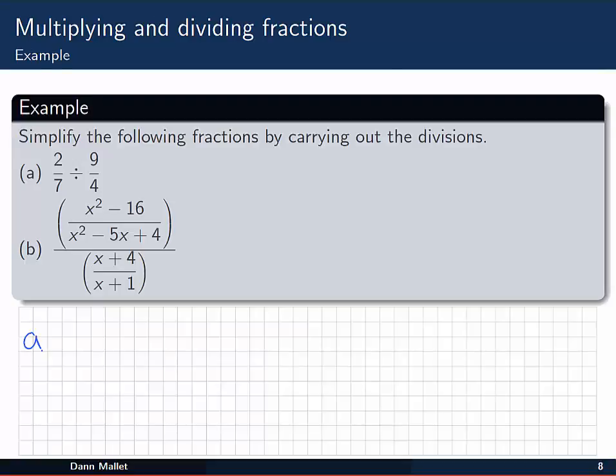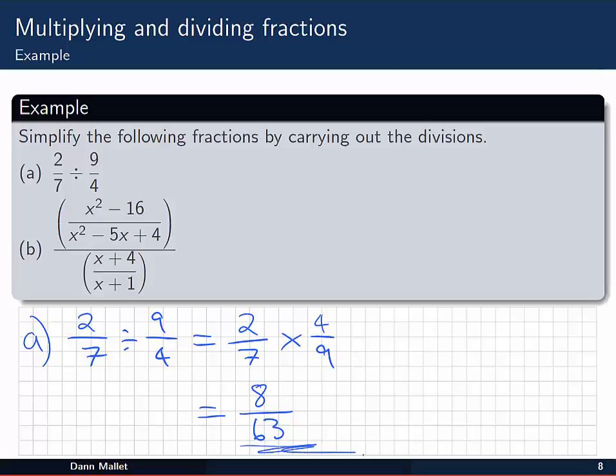So some examples here. First of all a simple one just with numbers. 2/7 divided by 9/4. We leave the 2/7. The number we're dividing by, 9/4, we change to its reciprocal, 4/9. And the division becomes a multiplication. And we clean that up as two by four, 8 over seven by nine, which is 63. Look for any common factors there that we can cancel. And I don't think there are any. So we're going to leave it like that.